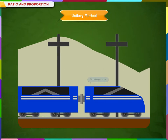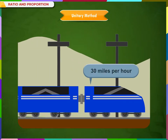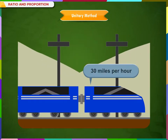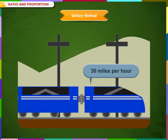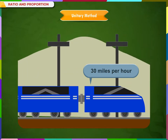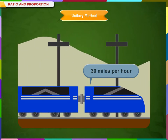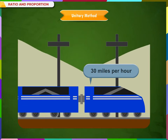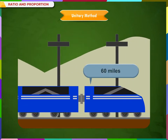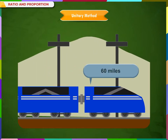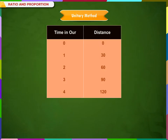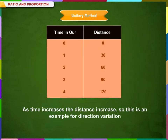Consider a train moving at a constant speed of 30 miles per hour. After one hour, the train has travelled 30 miles. After two hours, the train has travelled 60 miles. And so on — we can construct a chart and graph this relation. As time increases, the distance increases. So this is an example of direct variation.